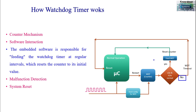The counter mechanism is the watchdog timer acting as a down counter. Software interaction means every time the software should check both hardware and software to confirm they are working properly. The embedded software is responsible for feeding the watchdog timer at regular intervals to avoid unwanted resets. Whenever there is a software or hardware fault — called a malfunction — software will not reset the watchdog timer, and after a timeout of maybe one or two seconds, it will reset the microcontroller.